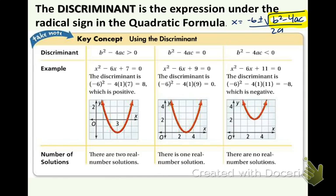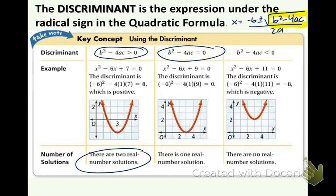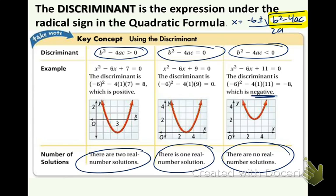There are three different options. If the discriminant is greater than zero — a positive number — there will be two real number solutions. If the discriminant equals zero, there is one real number solution. If the discriminant is less than zero — a negative number — there are no real number solutions. A solution represents how many times the parabola intersects the x-axis. In the first picture there are two intersection points, in the middle there is one, and in the last one the parabola does not cross the x-axis at all.